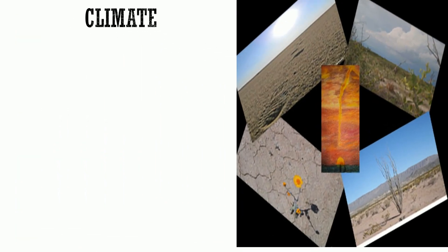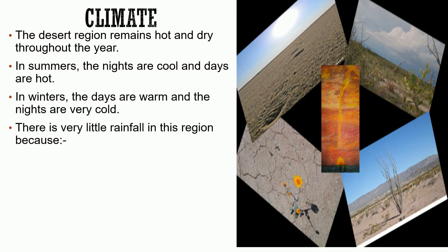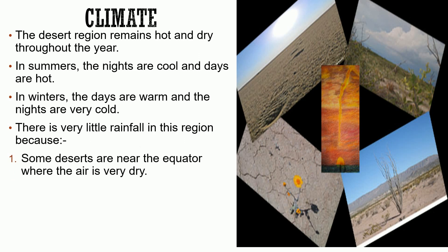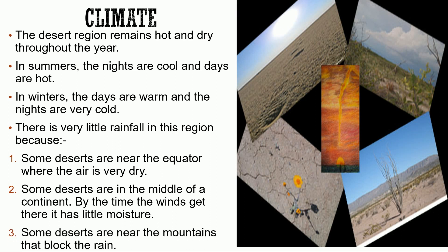Let's learn about the climate. The desert region remains hot and dry throughout the year. In summers, the nights are cool and days are hot. In winters, the days are warm and the nights are very cold. There is very little rainfall in this region because some deserts are near the equator where the air is very dry, some deserts are in the middle of the continent where winds have little moisture by the time they arrive, and some deserts are near mountains that block the rain.